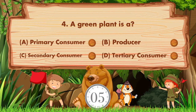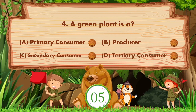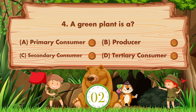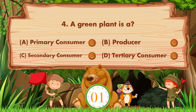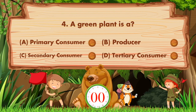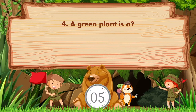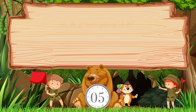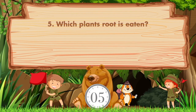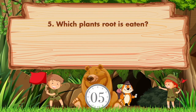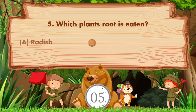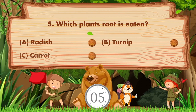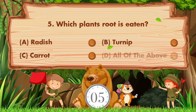A green plant is a — option A is primary consumer, B producer, C secondary consumer, D tertiary consumer. Answer is option B: producer.